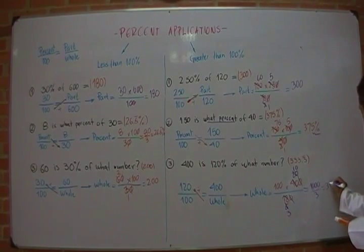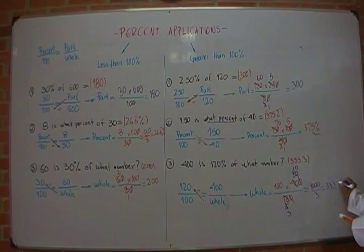And I will find that this is 1,000 divided by 3. If you perform the division, you will find that this is a repeating decimal, 333.3 repeating.